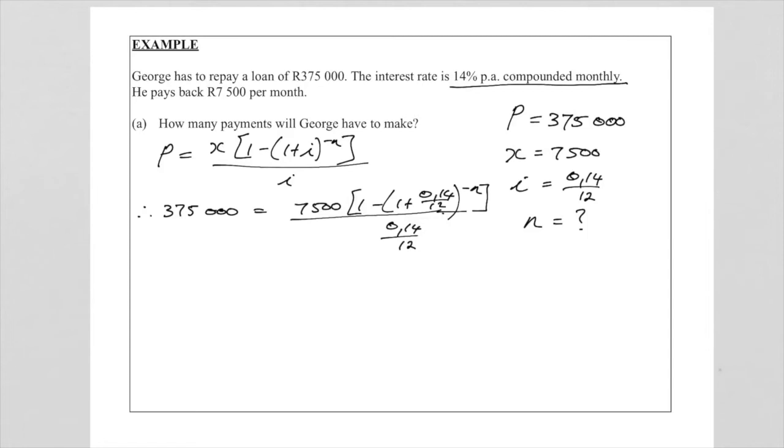Now we want to solve for n so that means we want to get this bracket to the minus n on its own. So to do that we will multiply both sides with this denominator and we will divide by 7,500. So that will give us 375,000 times by 0.14 over 12 and then we divide with 7,500, and that is equal to 1 minus (1 plus 0.14 over 12) to the minus n.